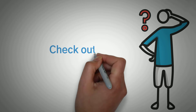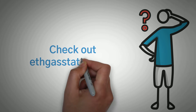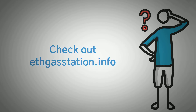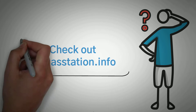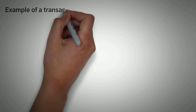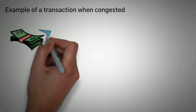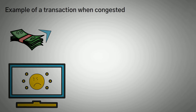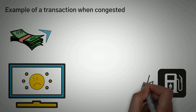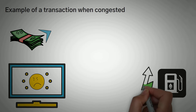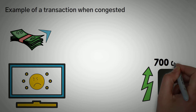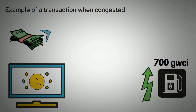If you're curious what the current price of gas is, you can check out ethgasstation.info — there's a link in the description below. Let's go over one more example just to make sure you get the hang of it. Let's assume the same situation as above, but for this example we're going to say the network is very busy, and because of this the cost of gas is now 700 GWEI instead of 100 GWEI.